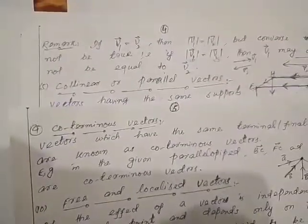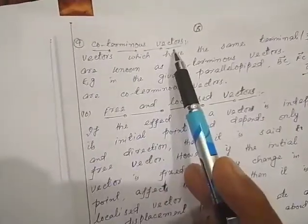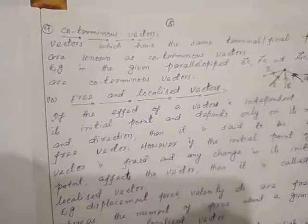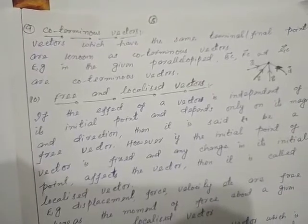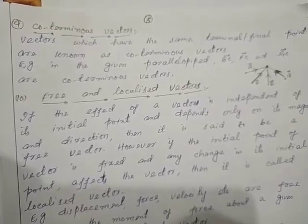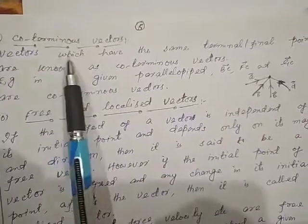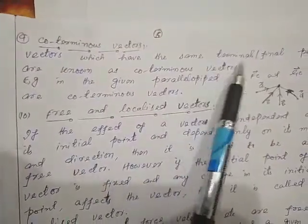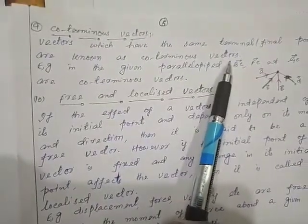Now there lies another type of vector, and that is known as co-terminus vectors. Co-initial had the same initial point; co-terminus has the same terminal point. The terminal point — or the final point, the destination — is the same for all such vectors.